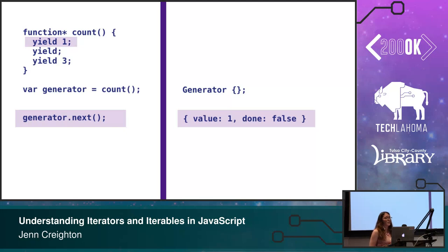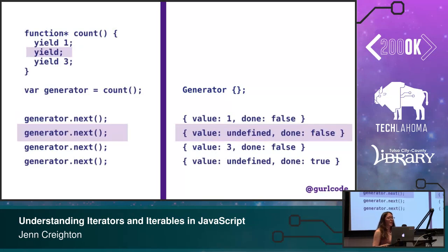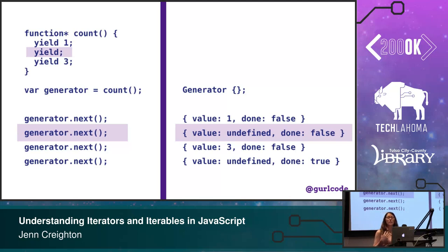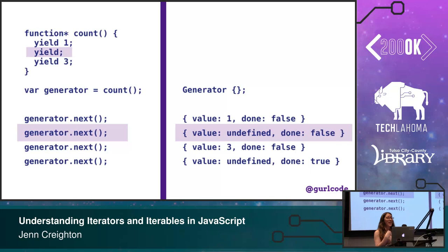Done is going to tell you the status of the generator — if it's done or not. You can also yield without any value; yield just means pause, and in that case the value will be undefined. Each time you're calling next and yielding, it is a true pause. Most JavaScript I write is run to completion — once I start the program it's not going to pause. But with generators you're actually pausing the code, and the function isn't going to run again until I tell it to by calling next.